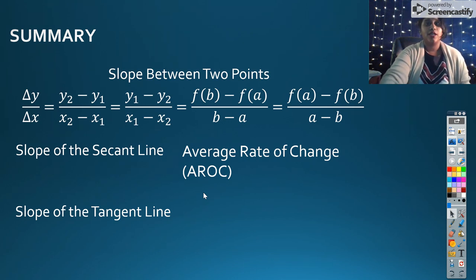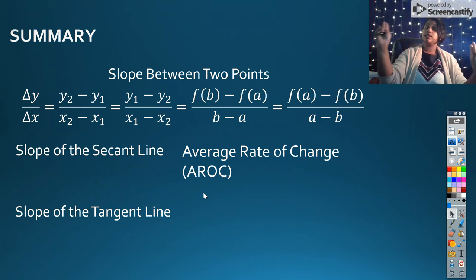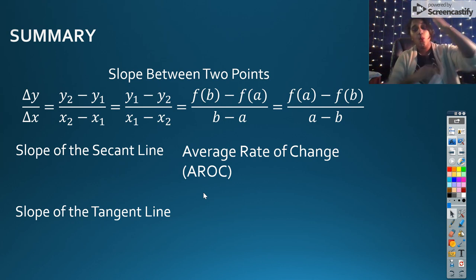But what about the slope of a tangent line? What's that big difference? Well, again, secant hits my curve at exactly two points. Well, the slope of a tangent line hits at exactly one point.